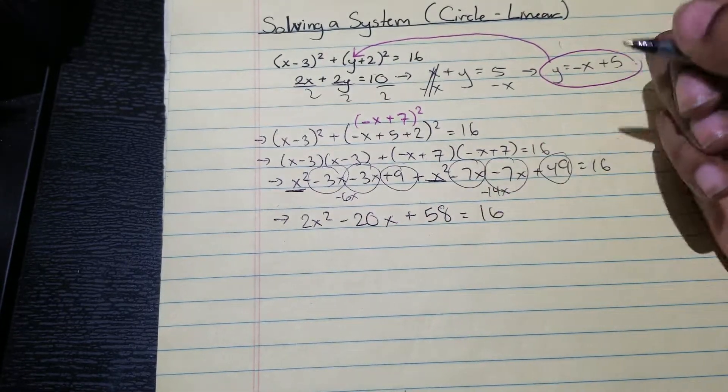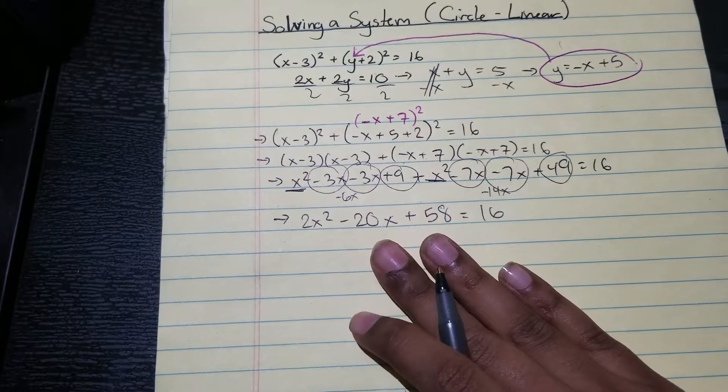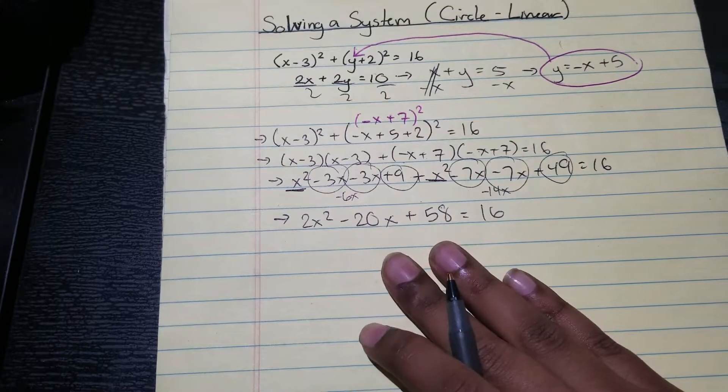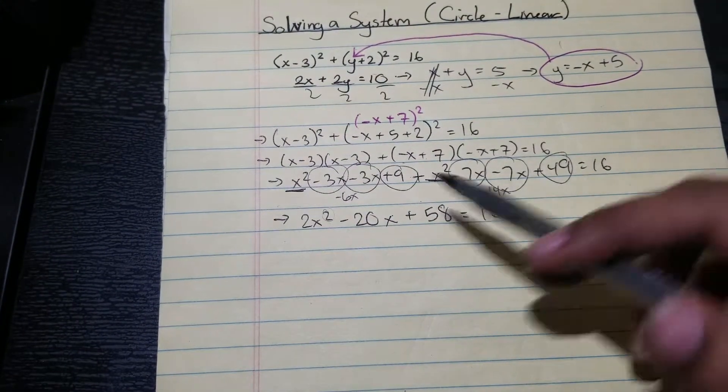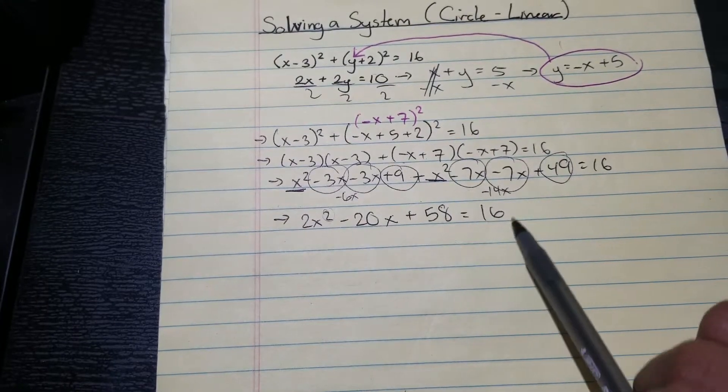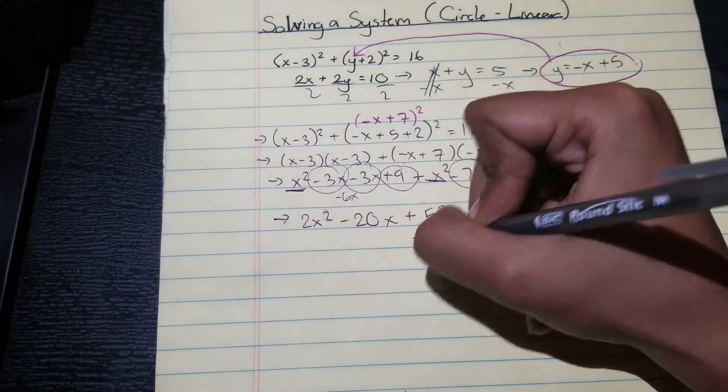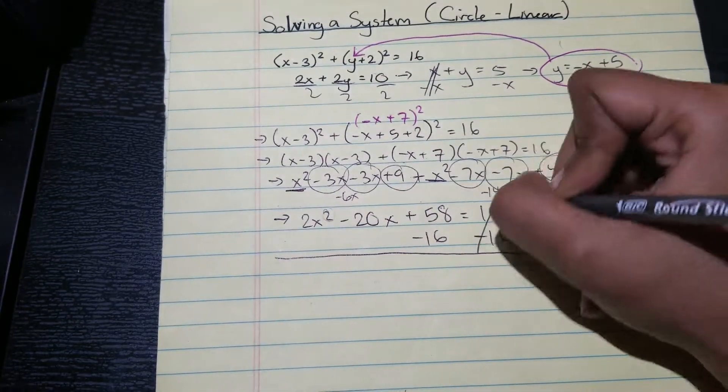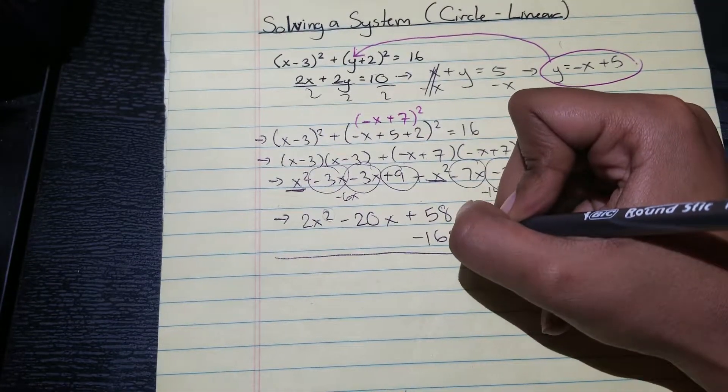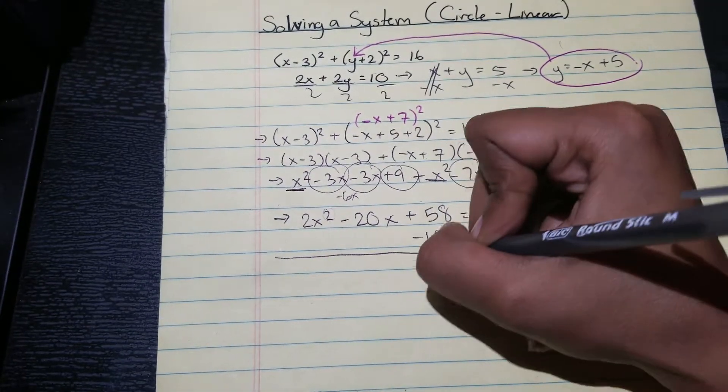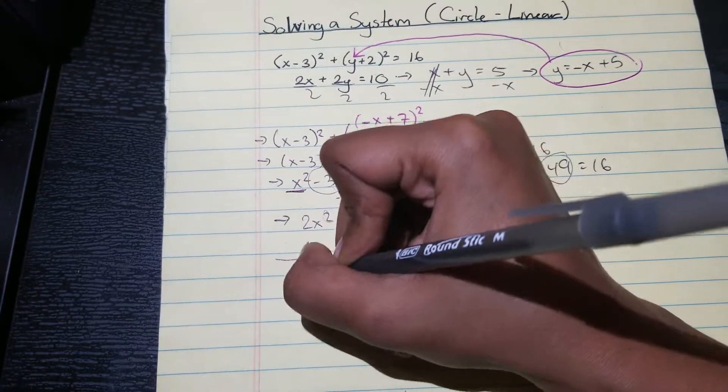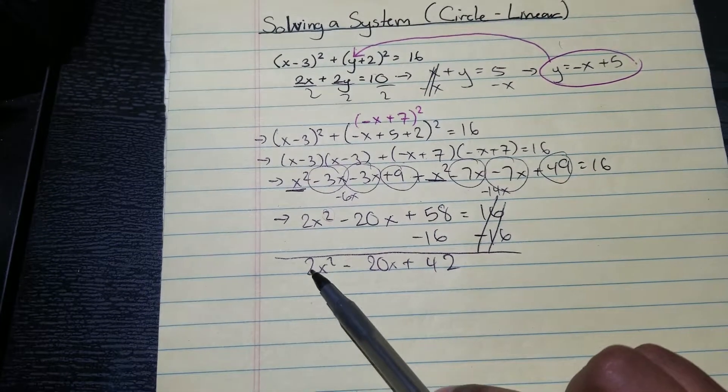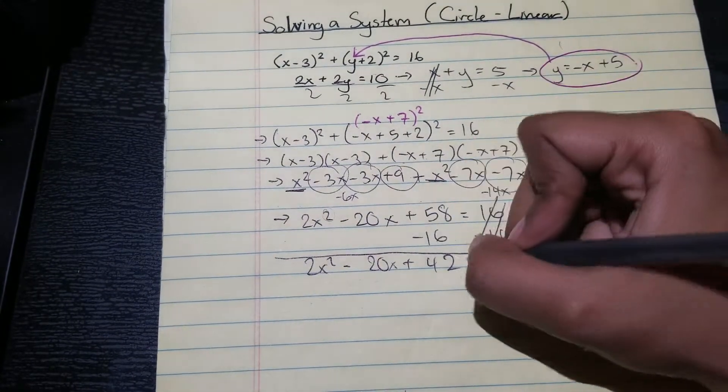Equals 16. Now because this is a quadratic equation, right, my degree is two, I'm gonna have to end up factoring anyway. And because I need to factor, I need to set this equation equal to zero, so I actually need to minus 16 on both sides. So that's going to give me two x squared minus 20 x plus 42 equals zero.